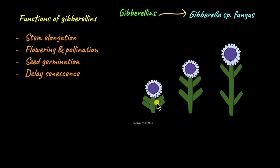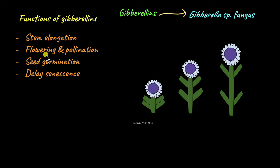Initially the plant has two very closely located internodes, then the space increases, and the distance between the internodes has increased a lot. This increase in internode distance is due to the action of gibberellins. Gibberellins are also involved in flowering and pollination — specifically the growth of the pollen tube is also governed by gibberellins.